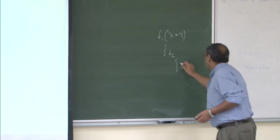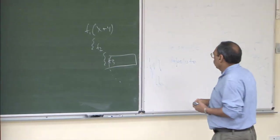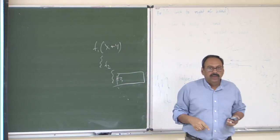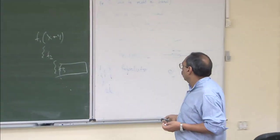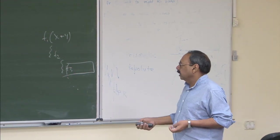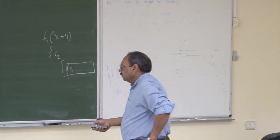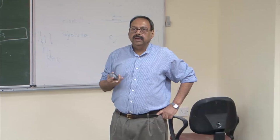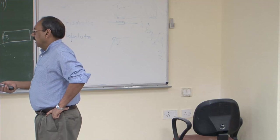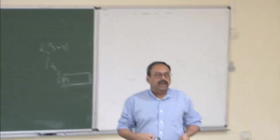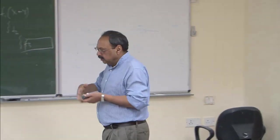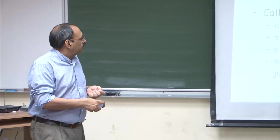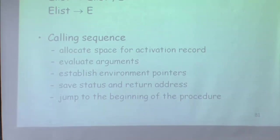Environment pointers are the ones which are going to capture scope information. If I have a function f1 at one level, within that f2, within that f3, at some deep level of nesting, when I invoke a particular procedure I must know which variables of f3 are fetched from within the scope of f3, f2, f1, and so on. I must have pointers to all those environments, and I must save status and return addresses.